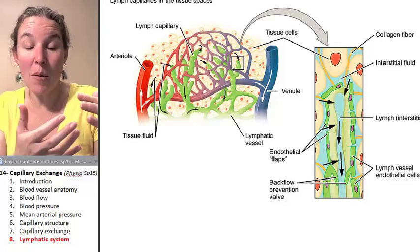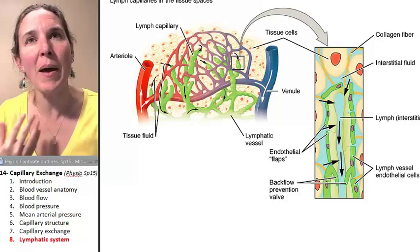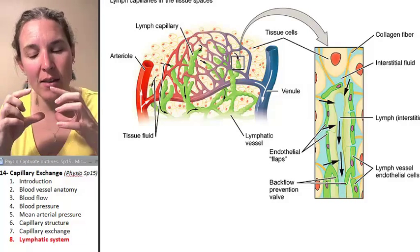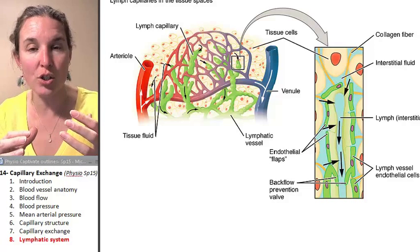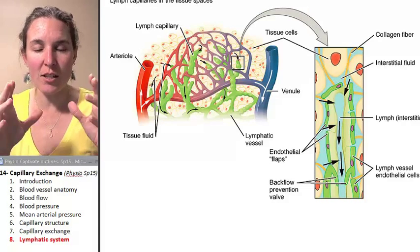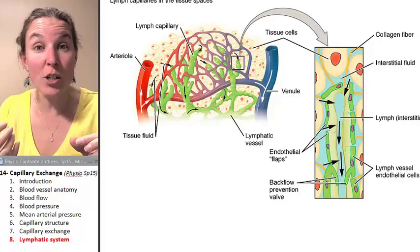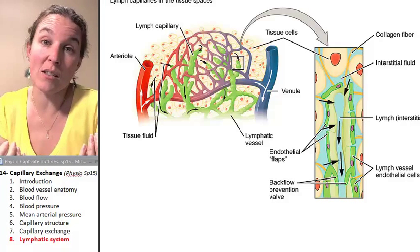And you're dumping or it's a passive process. The lumen of the lymphatic vessels is kind of a low pressure zone. And there's lots of reasons for that. So the fluid just flows easily into the lymph vessels.